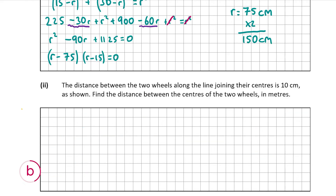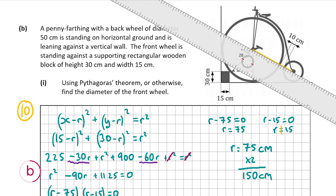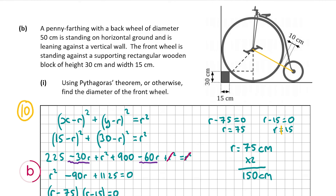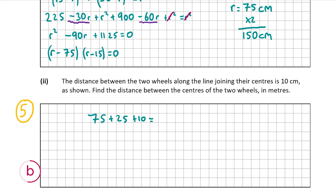B part two is worth 5 marks. We're told the distance between the two wheels along the line joining their centers is 10 centimeters, and we need to find the distance between the centers in meters. The total distance is the radius of the larger wheel (75 cm) plus the gap between wheels (10 cm) plus the radius of the smaller wheel (half of 50 cm, which is 25 cm). That gives 75 plus 25 plus 10, which equals 110 centimeters. Converting to meters by dividing by 100 gives 1.1 meters.